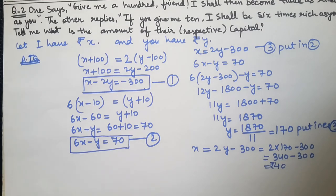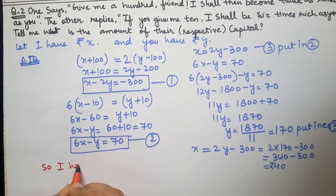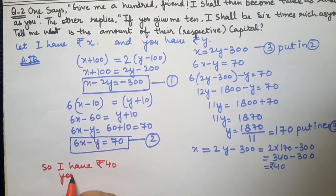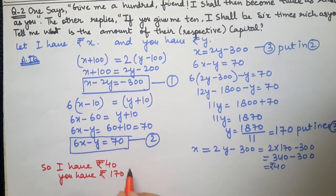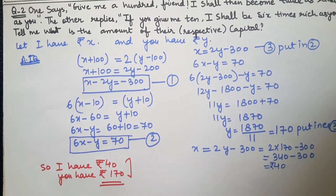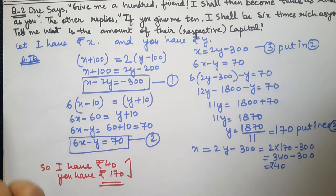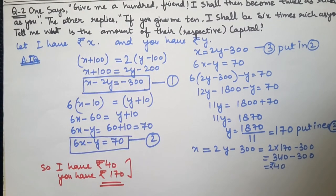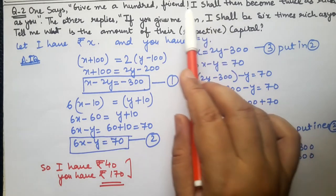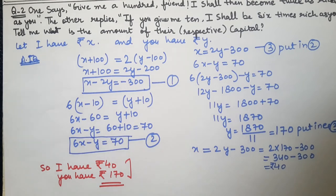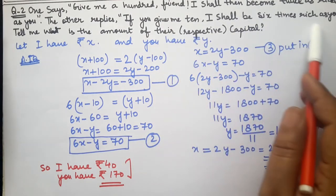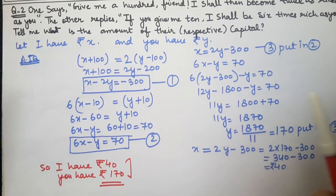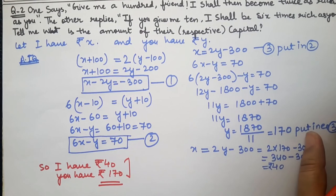So these amounts check out. The answer statement is: I have rupees 40 and you have rupees 170. This was a simple question. In real life problems, you have to read carefully and form equations one by one. Two friends — one has x rupees and the other has y rupees. I solved it using the substitution method, but you can use any method. I will show different methods in different questions.